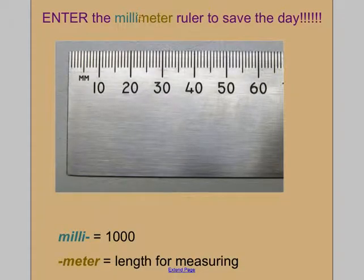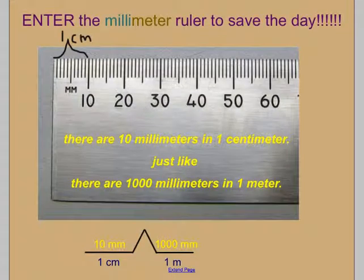Aha! Enter the millimeter ruler to save the day for Mr. Nutty's candy canes. Here's something cool about millimeter, if you didn't know this. Milli means 1,000 and meter, the suffix. Milli is the prefix, meter is the suffix. Meter means a length for measuring. You can remember millimeter by thinking 1,000 millimeters in 1 meter. Tiny little guys. And something else really cool is that there are 10 of these little millimeters in 1 centimeter. You heard me right. 10 millimeters in 1 centimeter.